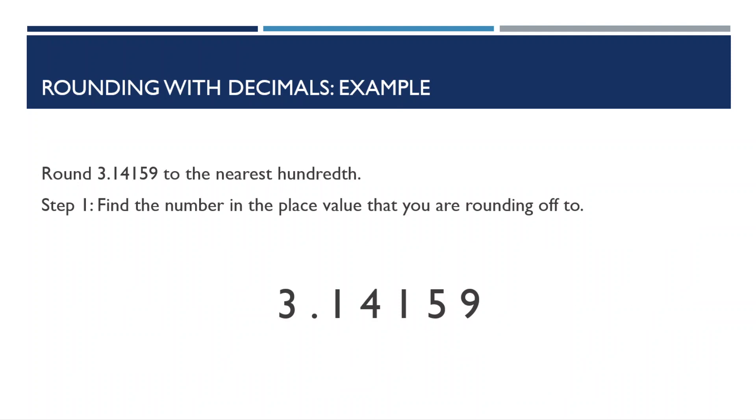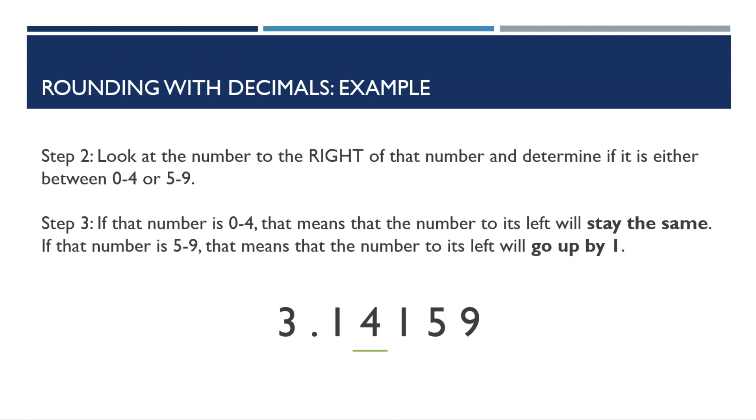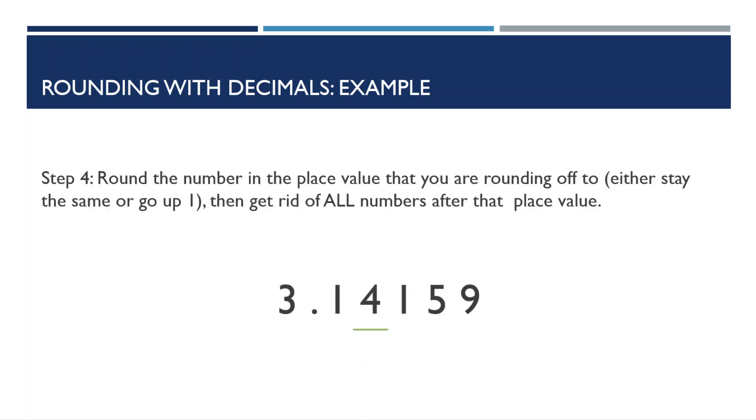Let's do some examples now. Here it says to round 3.14159 to the nearest hundredths. So, step one would be to find the number in the hundredths place. In this case, it's 4. Step two is to look at the number to the right of the 4, and determine if it's either between 0 to 4, or 5 to 9. That number is 1, which is between 0 and 4, so that means when we round, the number in the hundredths place is going to stay the same. Finally, we round that number 4, though in this case it will just stay the same, and then get rid of all the numbers after that 4. You're left with the rounded off number 3.14.